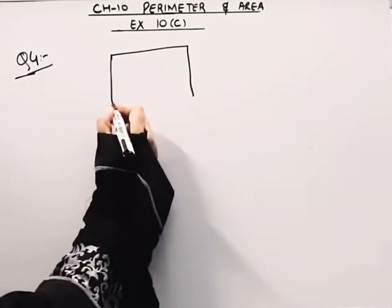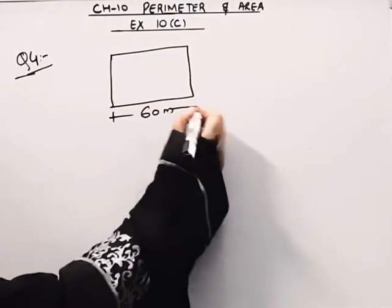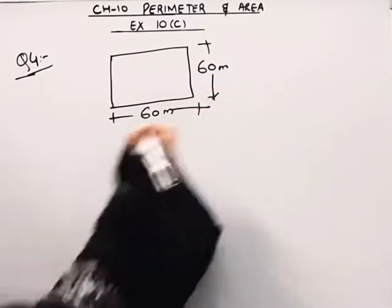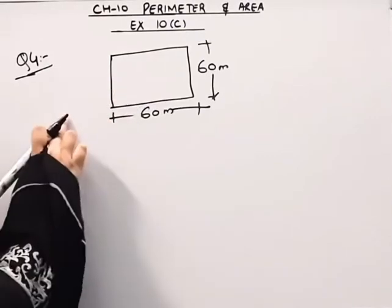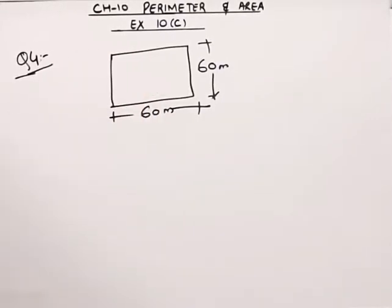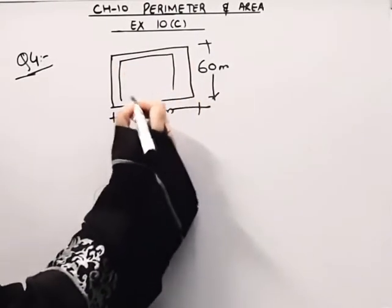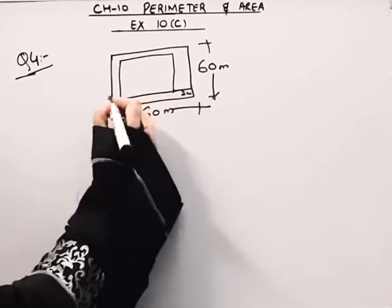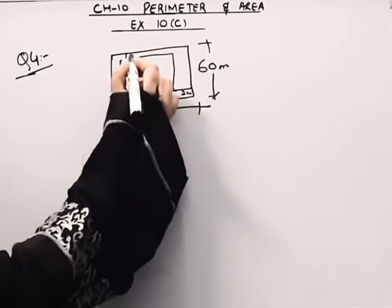There is a square garden. We have to focus and concentrate on the fact that the path which is built is 2 meters wide. Whether the path is outside or inside — here it is inside the garden. This is 2 meter wide on all sides: this side is 2 meters, this side is 2 meters, here also 2 meters, and here also 2 meters wide.